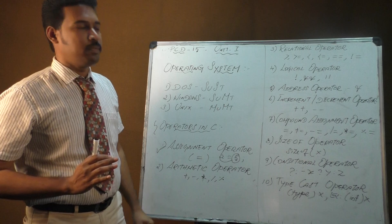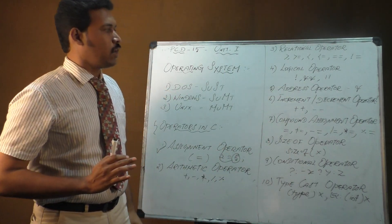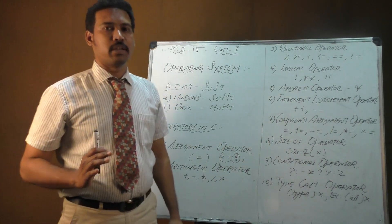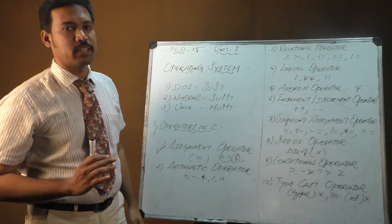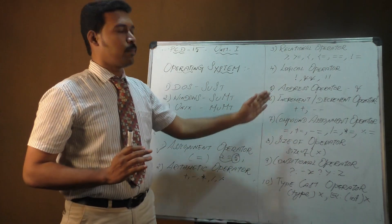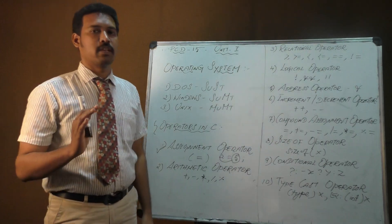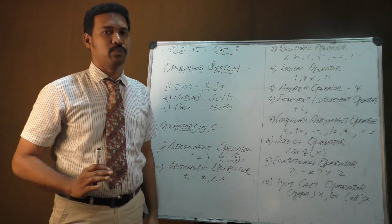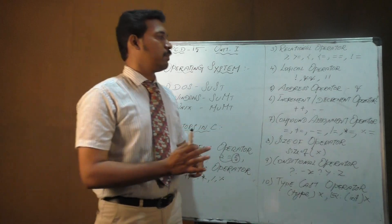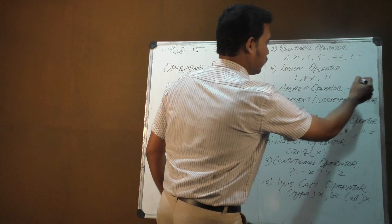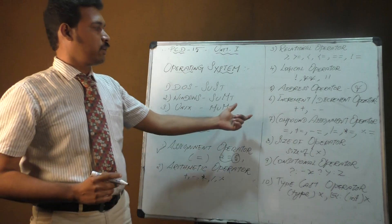The fourth is the logical operator, which defines the logical relationship between different variable values. Three types are available: logical AND, OR, and NOT. The fifth is the address operator, which represents the address of a particular variable in memory.